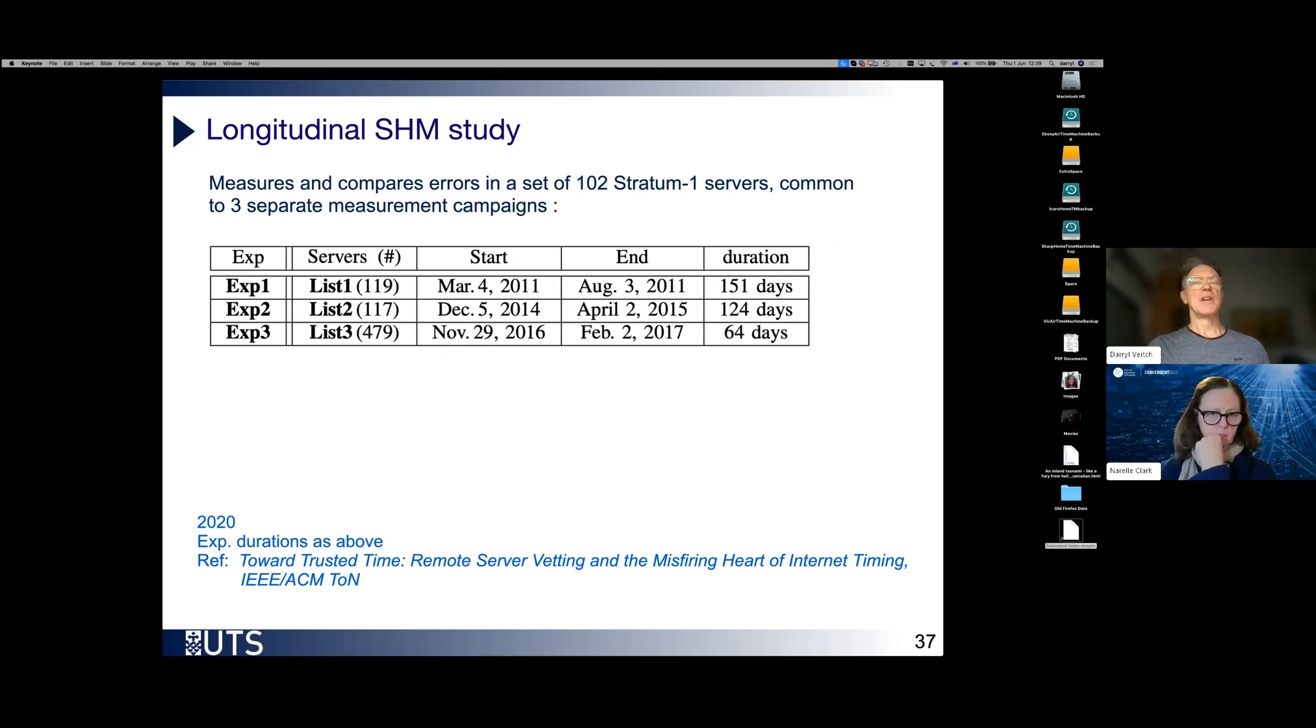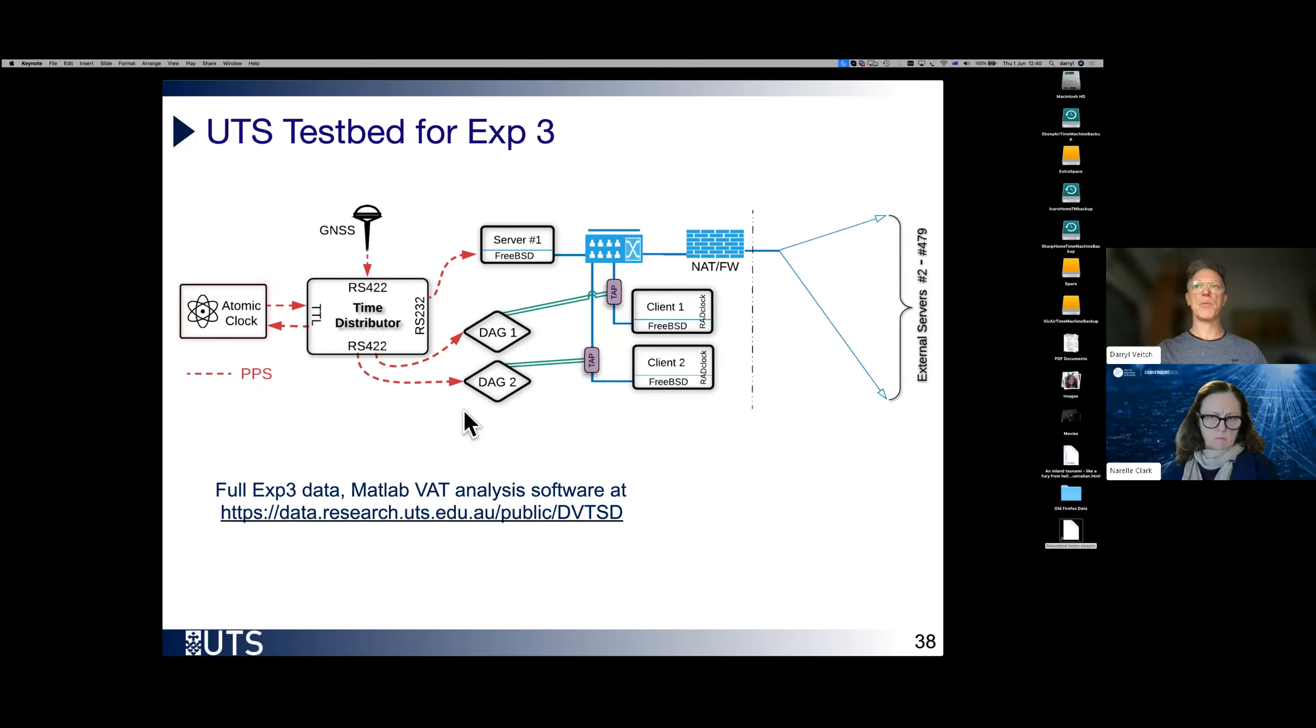So we were really interested in this. So we performed, we made use of an existing earlier data set that we collected in 2011, augmented another data set, each one, quite a long data collection period. And then finally, a much bigger experiment later on, a few years later again, this time covering several hundred servers. And what we found is we were able to get 102 of these Stratum 1 servers which are actually in common across these two experiments.